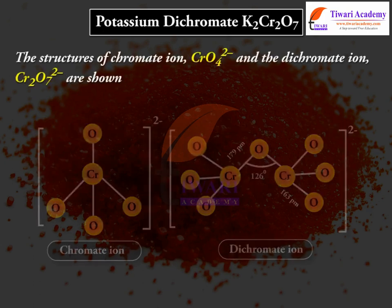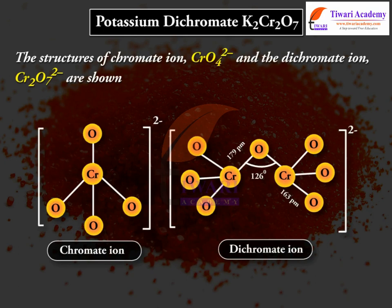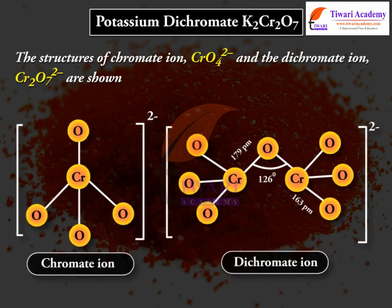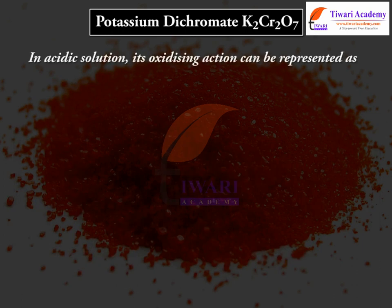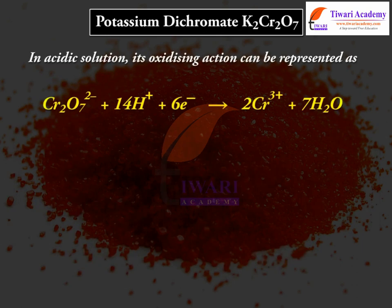The structures of the chromate ion CrO₄²⁻ and the dichromate ion Cr₂O₇²⁻ are shown. In acidic solution, its oxidizing action can be represented as: Cr₂O₇²⁻ + 14H⁺ + 6e⁻ → 2Cr³⁺ + 7H₂O.